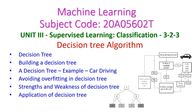In this machine learning class we will see the decision tree algorithm from the third unit: supervised learning classification. Today's class covers the definition of decision tree, building a decision tree, one simple example of how the decision tree will make decisions, avoiding overfitting, and the strengths, weaknesses, and applications of decision tree.